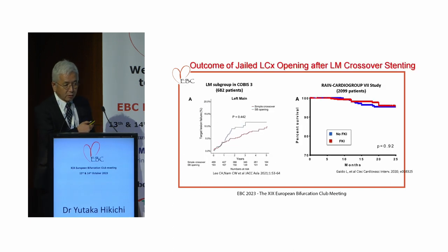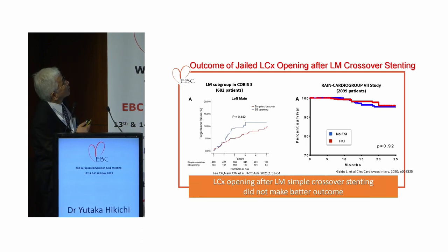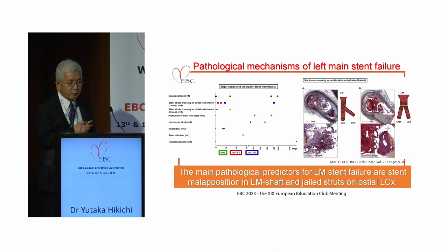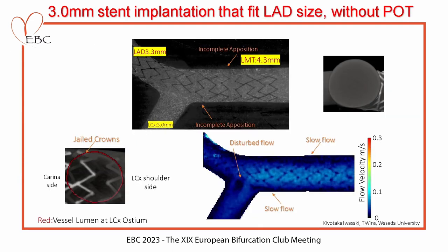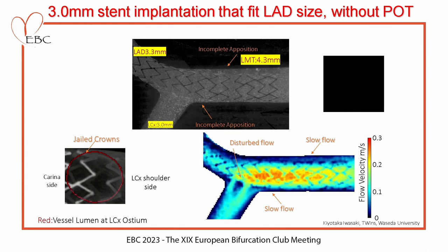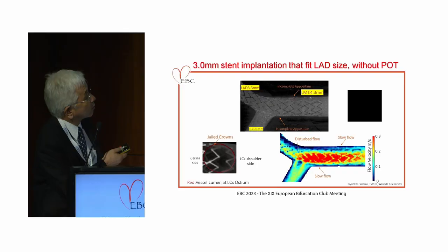The important result from the circumflex opening after left-main simple crossover stenting did not make a better outcome — a big surprise. However, pathological findings show the main pathological predictors for left-main stent failure are the stent malapposition in the left-main shaft and jailed circumflex ostium. Dr. Iwasaki's bench study showed the stent-incorporated malapposition areas remain a slow flow area between the stent strut and vessel wall, especially the proximal shaft and left-main shaft.